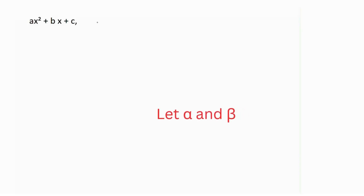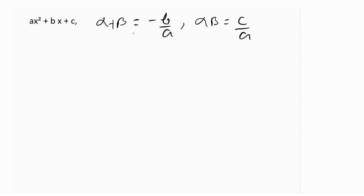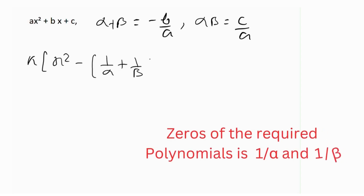Let alpha and beta be the zeros of the polynomial. Then alpha plus beta equals minus b over a, and the product alpha times beta equals c over a. To frame the new polynomial, we use the standard formula: a times [x² minus (sum of zeros) times x plus (product of zeros)], where the zeros are reciprocals, so the sum is 1/alpha plus 1/beta and the product is 1/(alpha·beta).